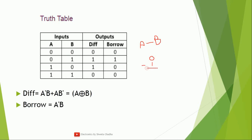Next is zero minus one. As we need to subtract a higher value from a lower value, which is not possible without taking a borrow, first we have to take one borrow. Borrow is always taken from the tens place to the units place, so zero will become ten (binary). Now we perform ten minus one. In binary, ten minus one equals one. In decimal, ten is equivalent to two, so two minus one is one. Hence the difference is one.